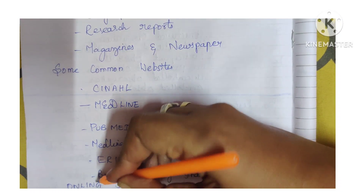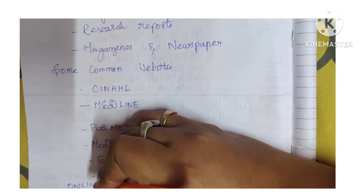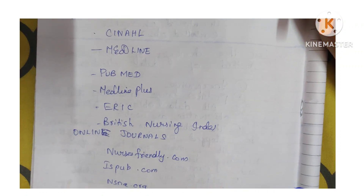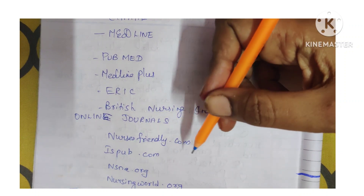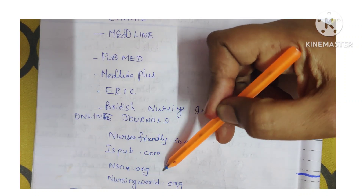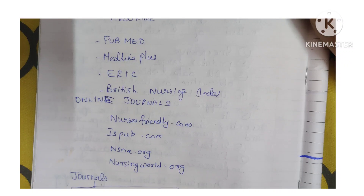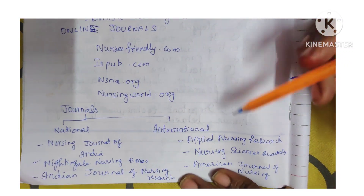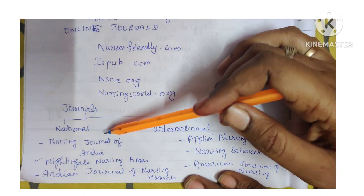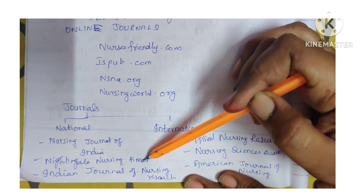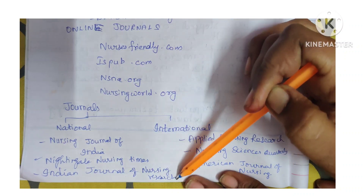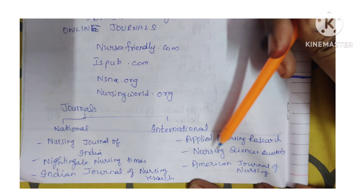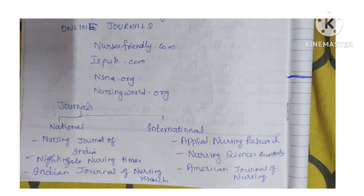Online journals and websites include British Nursing Index online journals, nursesfriendly.com, ispub.com, NSNA.org, and NursingWorld.org. National and international journals include the National Nursing Journal of India, Nightingale Nursing Times, Indian Journal of Nursing Research, International Applied Nursing Research, American Journal of Nursing, Nursing Sciences Quarterly, and others.